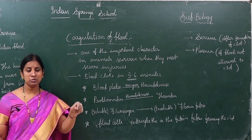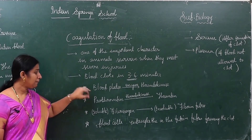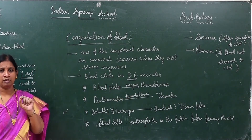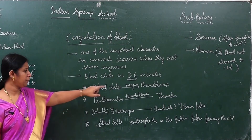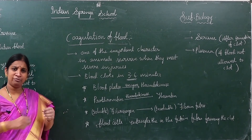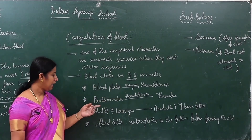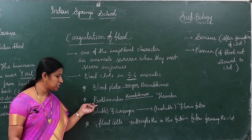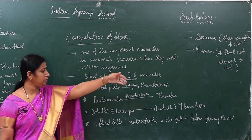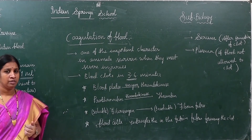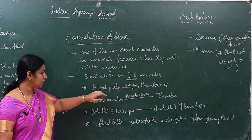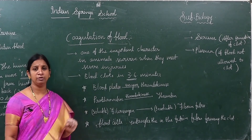In the first step of coagulation, as soon as an injury is formed, blood platelets immediately release an enzyme named thrombokinase. This thrombokinase then acts on another substance present in our blood called prothrombin, and converts prothrombin into thrombin. So the first reaction is: blood platelets release thrombokinase → thrombokinase acts on prothrombin → prothrombin is converted into thrombin.